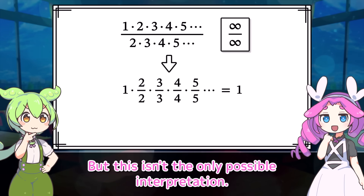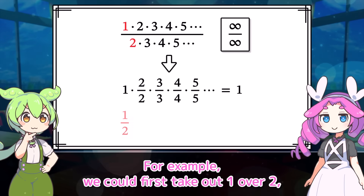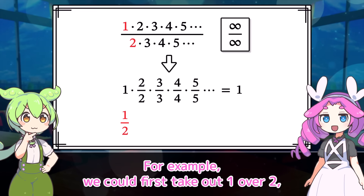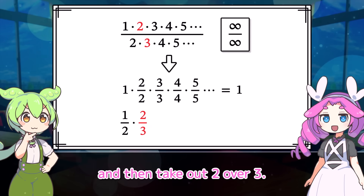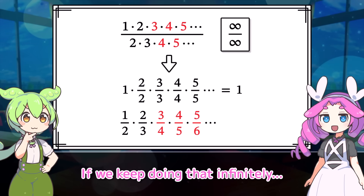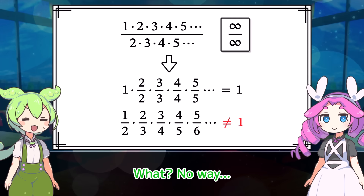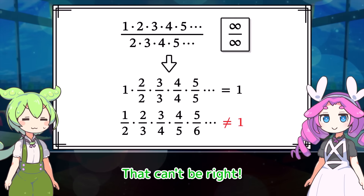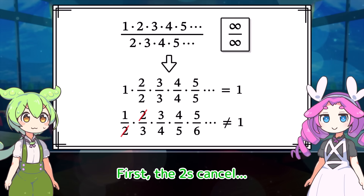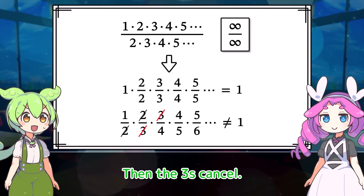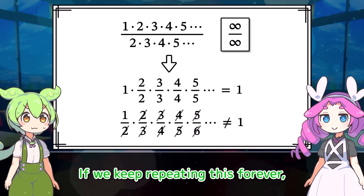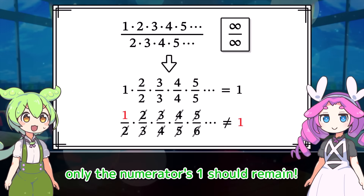But this isn't the only possible interpretation. For example, we could first take out 1 over 2, and then take out 2 over 3. If we keep doing that infinitely, the result is not equal to 1. That can't be right. First the 2s cancel, then the 3s cancel. If we keep repeating this forever, only the numerator's 1 should remain.